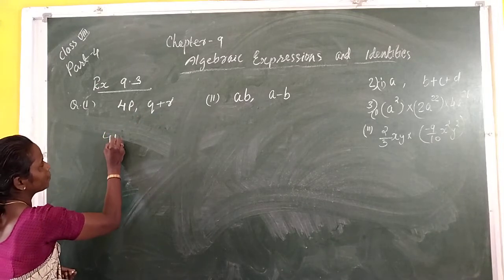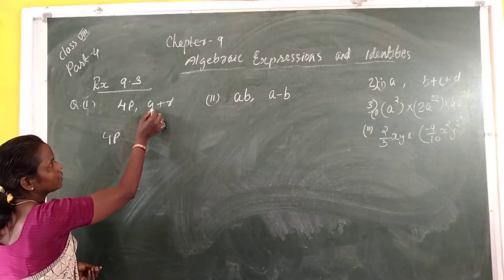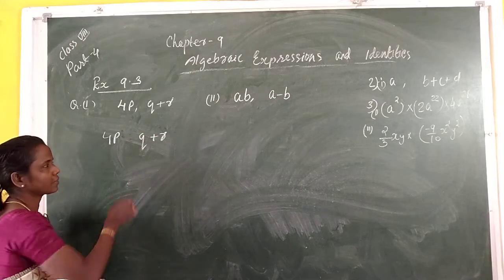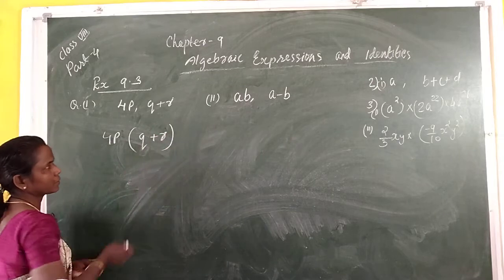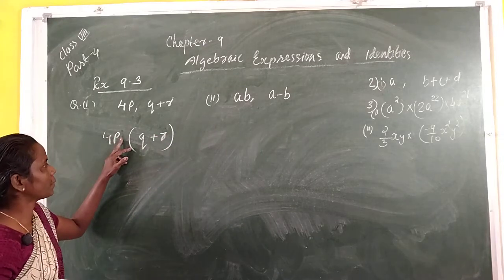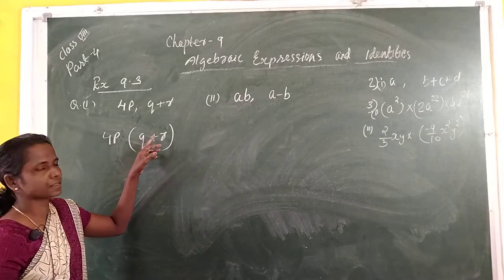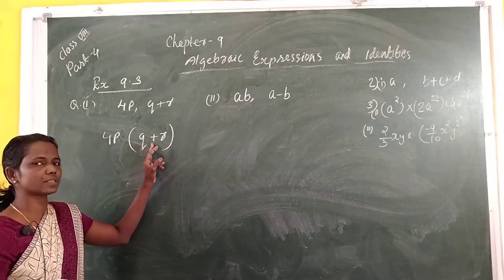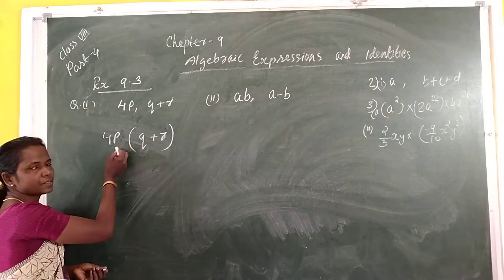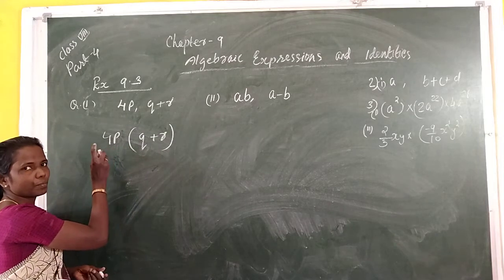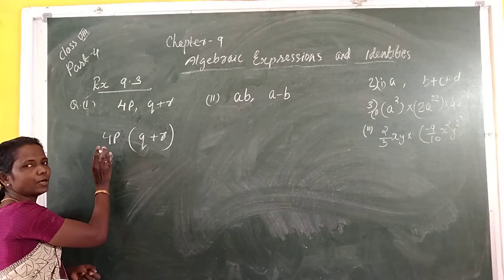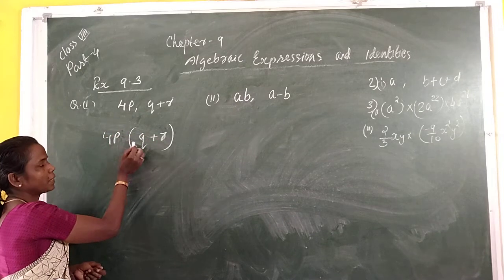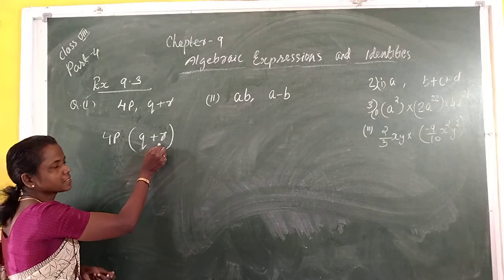We write 4P as the first monomial, then the binomial Q plus R inside the bracket, giving us 4P multiplied by (Q plus R). The binomial has two terms, so the monomial 4P multiplies each term — first the first term, then the second term.